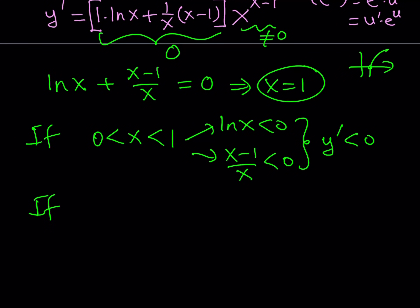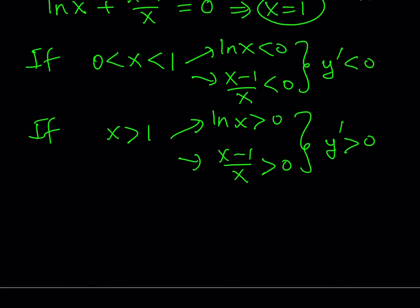What happens if x is greater than 1? Then ln x is going to be positive. And of course, our other piece, which is added, is going to be positive. Because think about something greater than 1, like 2. And this indicates that y prime is positive. So what does this tell you?